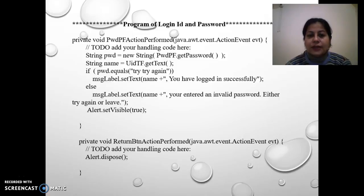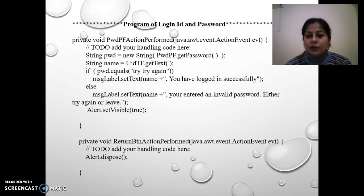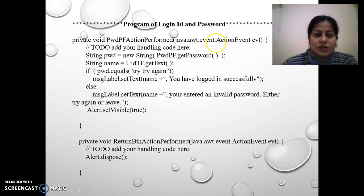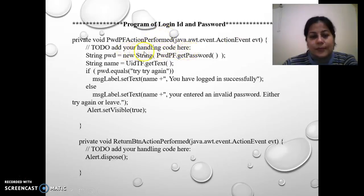In the brackets, we write java.awt.event.ActionEvent. We are writing on the action event, that is AWT. The slashes are to indicate 'add your handling code here' — those are just comments. Then I have declared a variable.